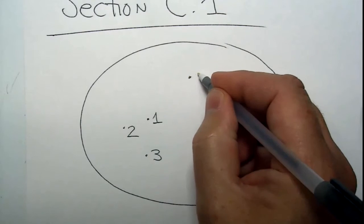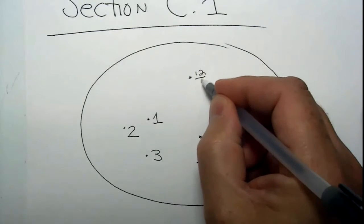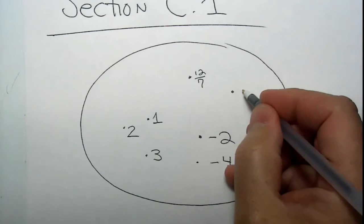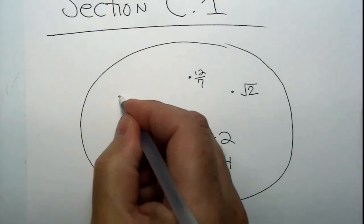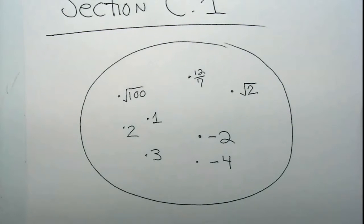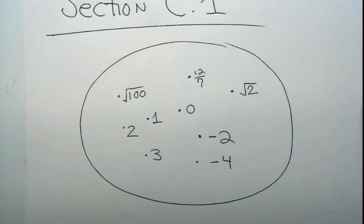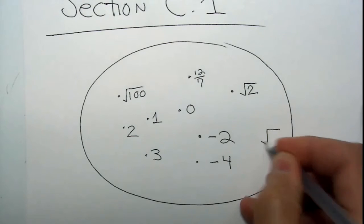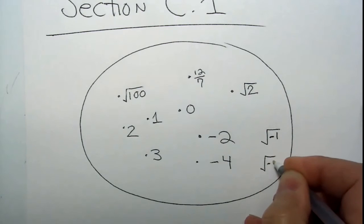Notice I've started with some pretty simple numbers, but let's try a few more. Let's put in 12 over 7. Let's put in a square root of 2. How about a square root of 100? No set of numbers would be complete without 0 — that's an important number. And over here, I'm going to put the square root of minus 1 and even the square root of minus 2.